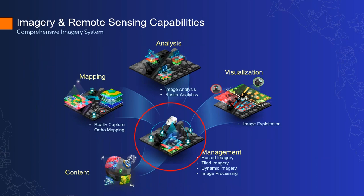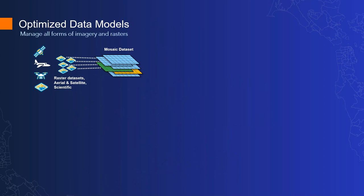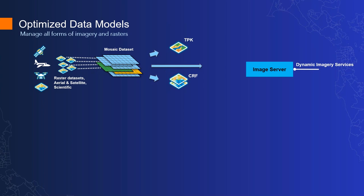Let's go into image management, which is about managing the content you may have within your organization. This is done using an optimized data model called the Mosaic Dataset, which allows you to reference all different data sources from different sensors or categorical data. Within the Mosaic Dataset, you define different processing to be performed on the imagery, and once defined, you can typically serve that out as dynamic image services, or persist it as tile package (TPK) or Cloud Raster Format (CRF) — optimized formats for performing analysis.